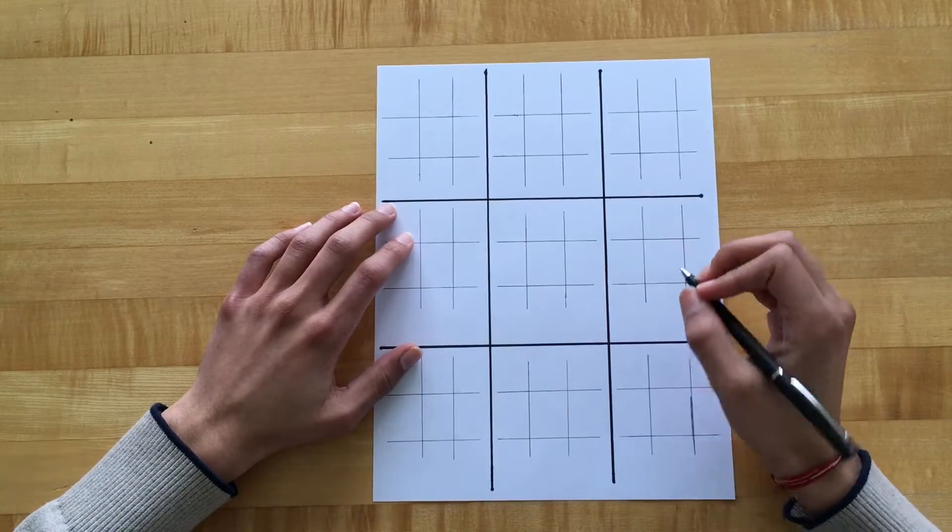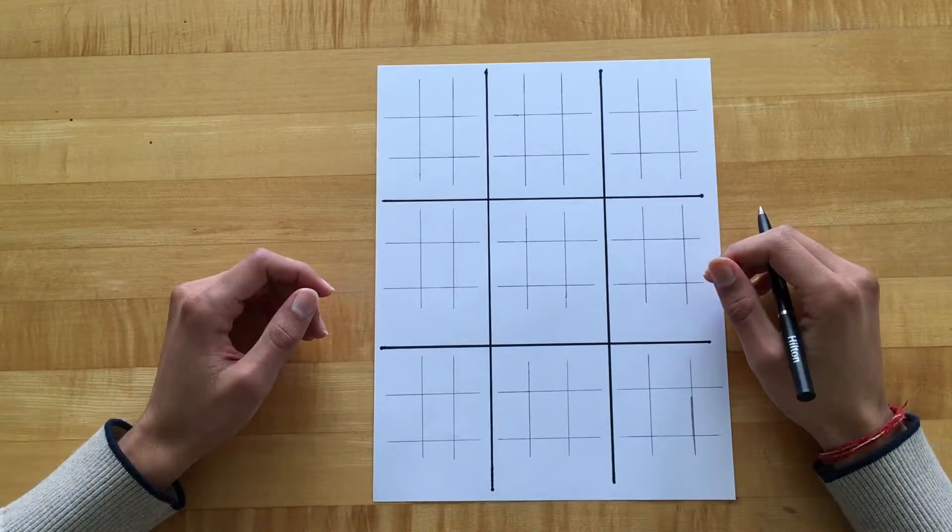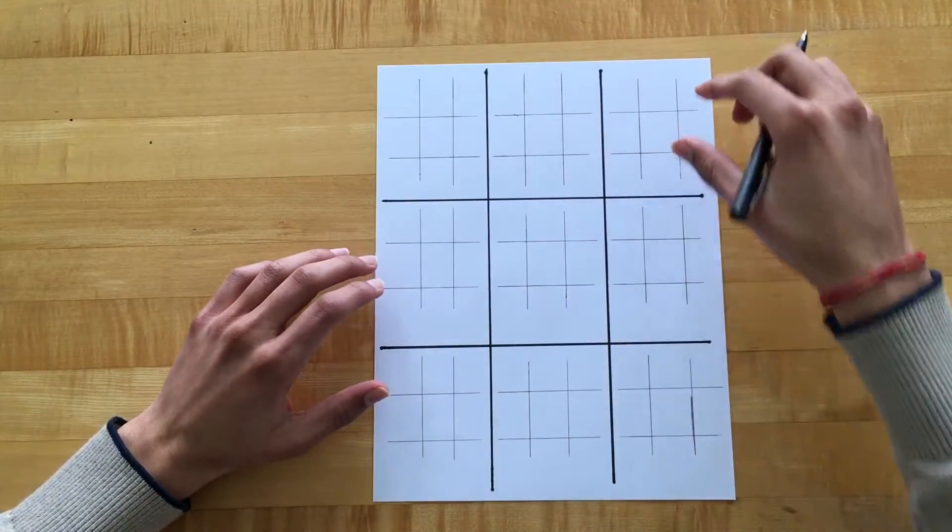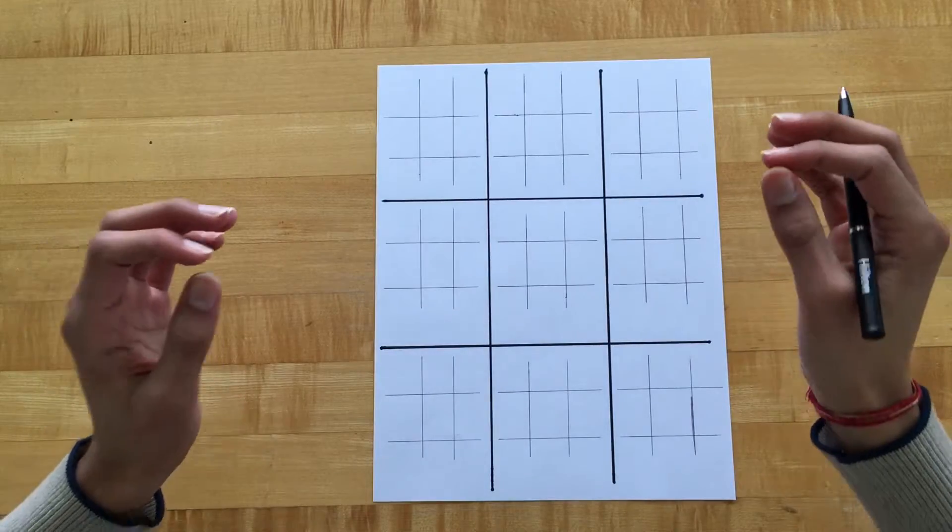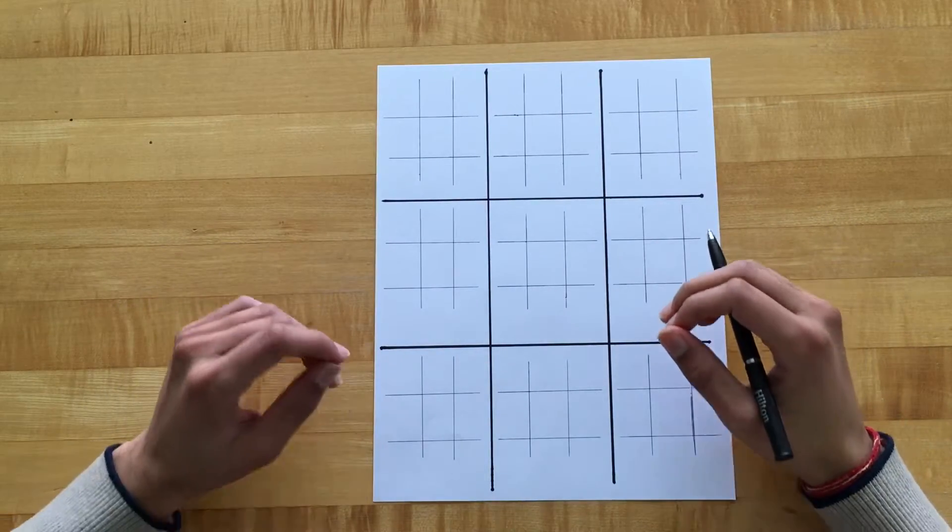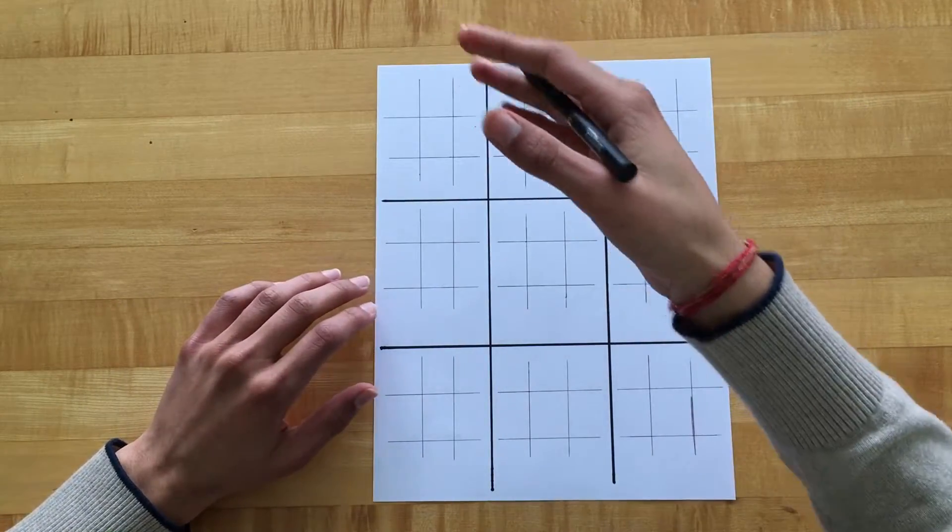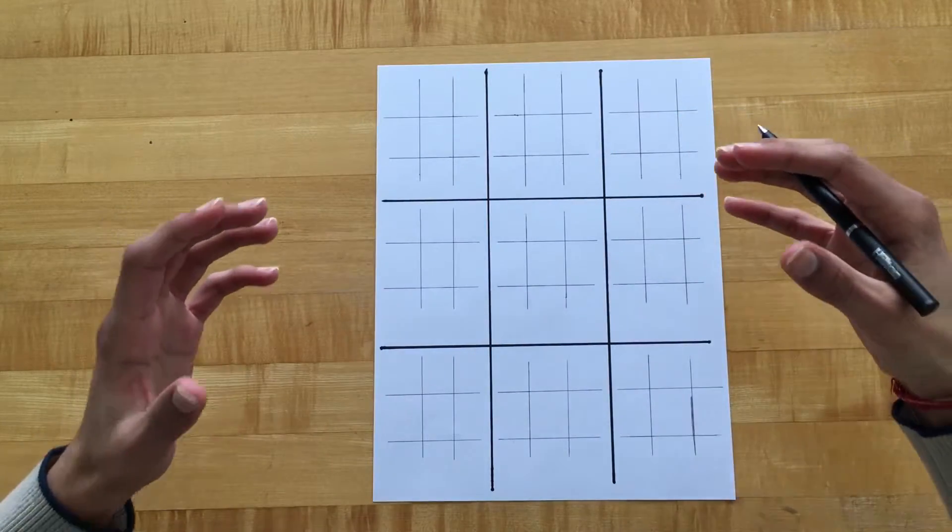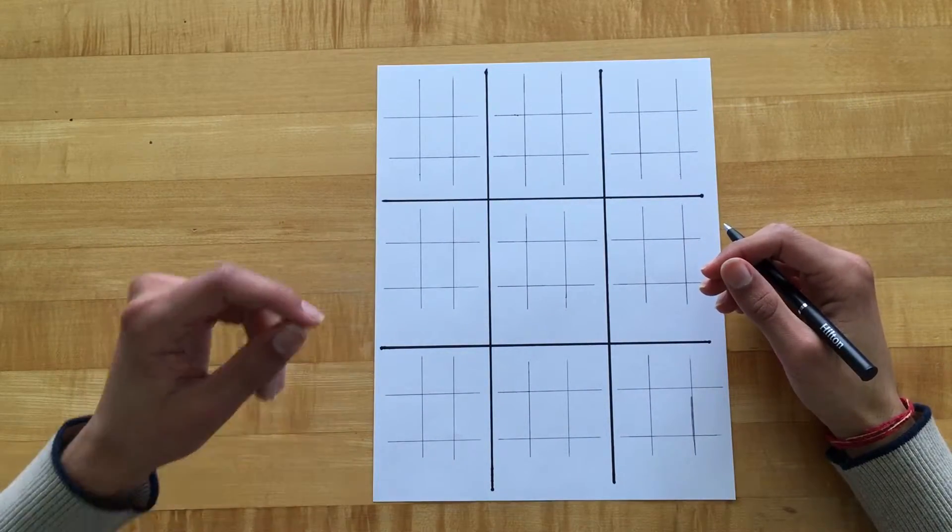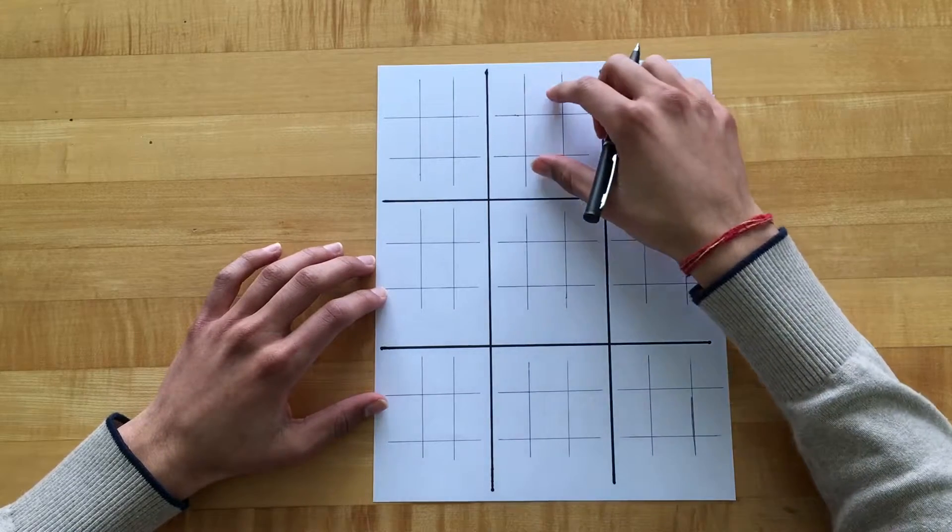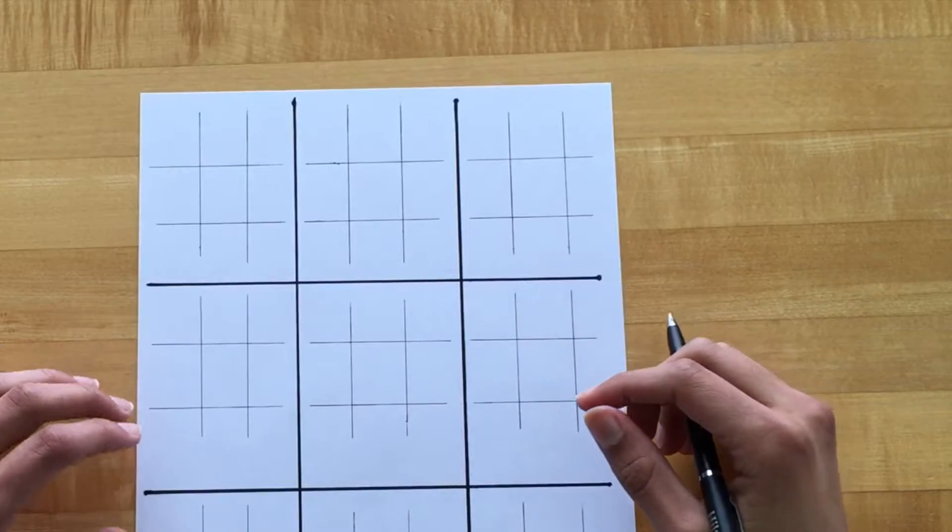Okay, so this is what the ultimate tic-tac-toe board looks like. These are all mini tic-tac-toe boards on a larger tic-tac-toe board. The objective of the game is to get three in a row on the larger tic-tac-toe board. Now the way you do that is by winning these smaller boards. The first player starts off by playing on any board, then the next player has to play on the board corresponding to where the first player placed their piece.